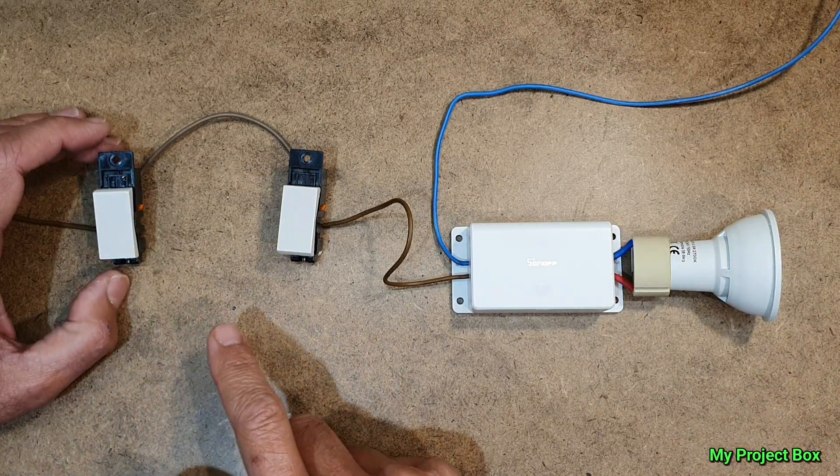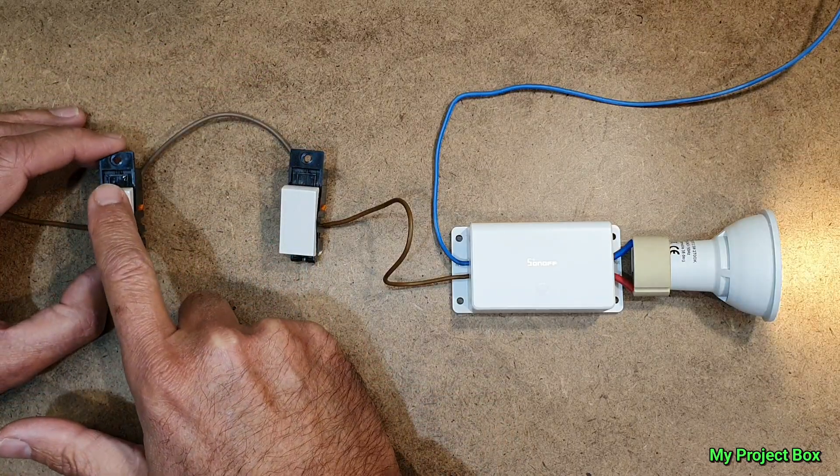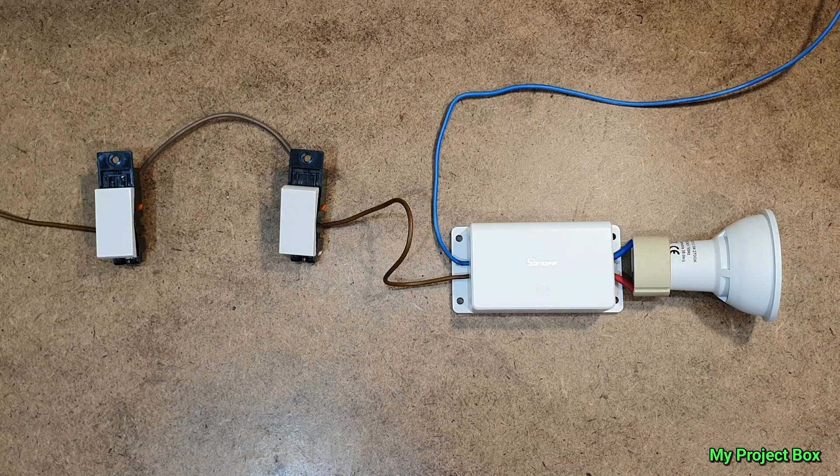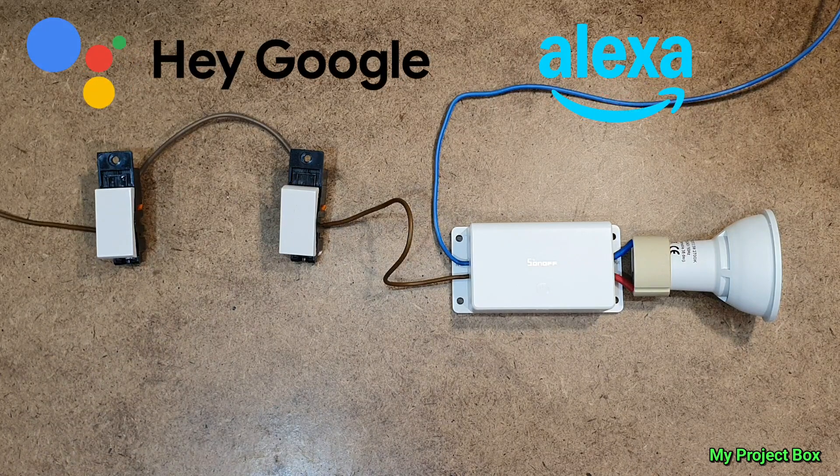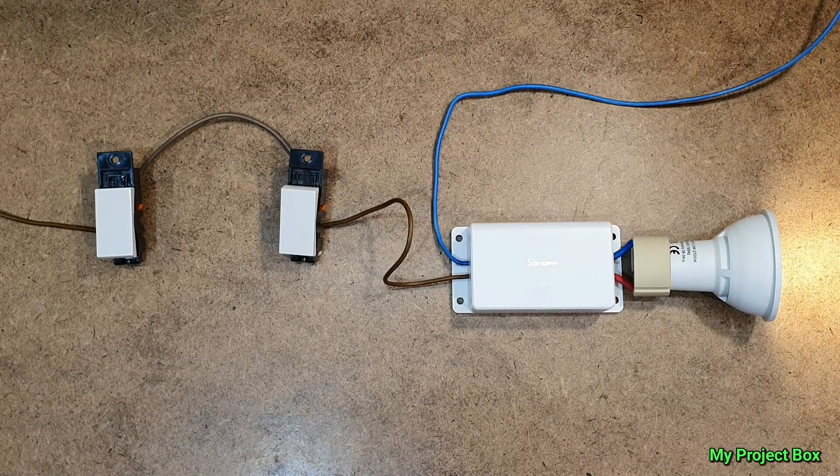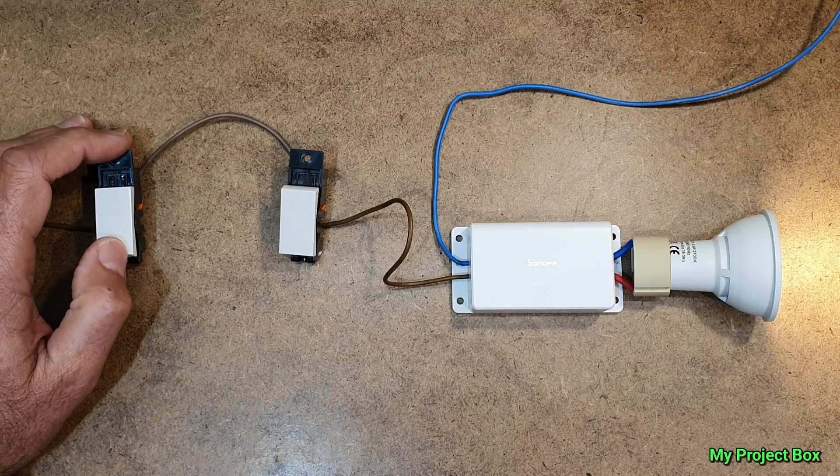So we can turn it off on one switch, turn it back on on this switch, turn it back on on the other switch. And of course we can use Google Home. Switch on the Gen5. And we can turn it manually off on the switch.